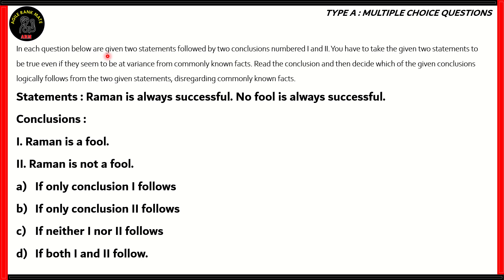In each question below are given two statements followed by two conclusions numbered one and two. You have to take the given two statements to be true, even if they seem to be at variance from commonly known facts. Read the conclusion and then decide which of the given conclusions logically follows from the two given statements, disregarding commonly known facts. This is one of those questions where the statements are considered true no matter what, and then using those statements, we need to find whether the conclusions are true.